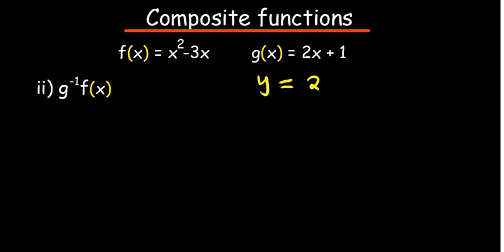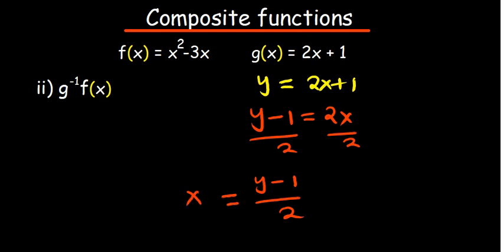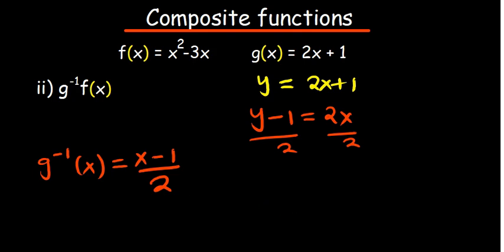To find the inverse of g(x), we replace g(x) with y, giving us y equals 2x plus 1. We then make x the subject: subtract 1 from both sides to get y minus 1 equals 2x, then divide both sides by 2. So x equals (y minus 1) over 2. By convention we put x on the left-hand side, and then we replace y with x and write g inverse of x equals (x minus 1) over 2. That is the inverse function.